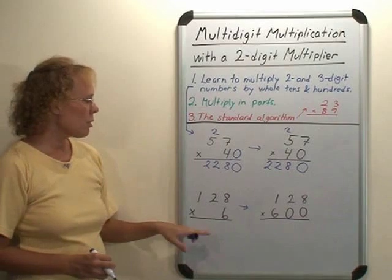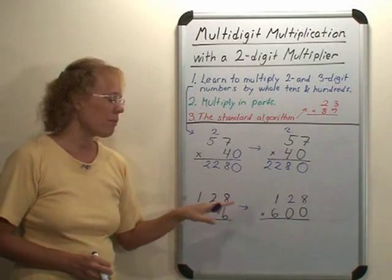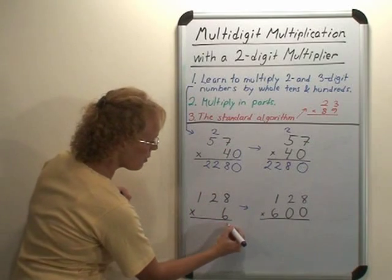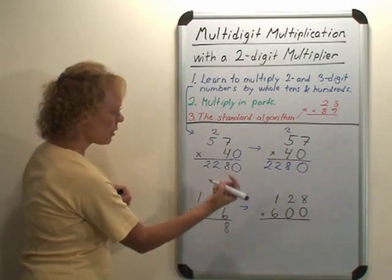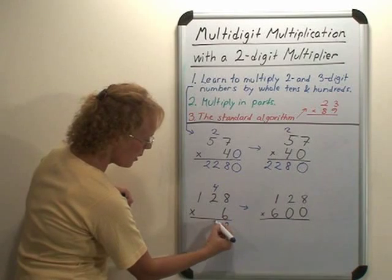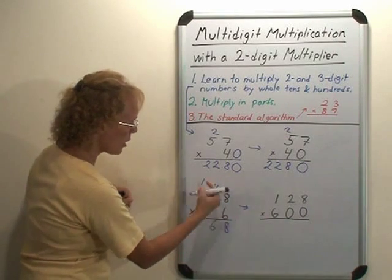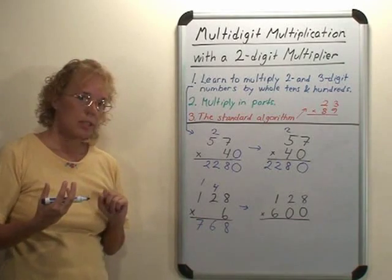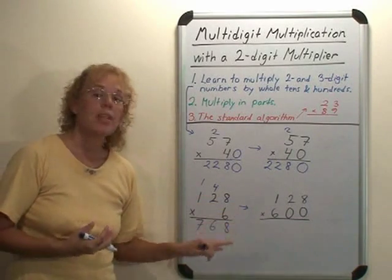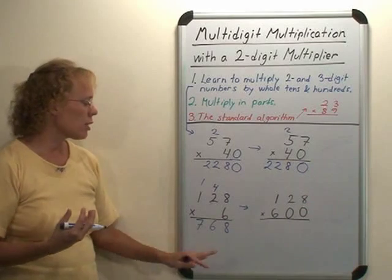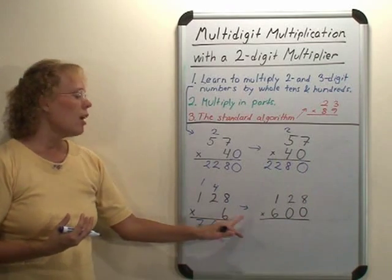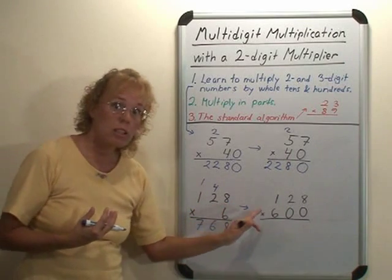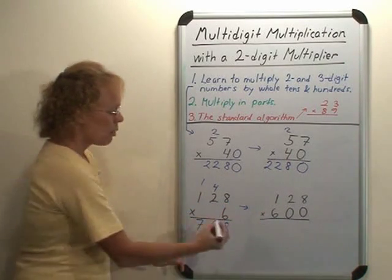Similarly, if we have a three-digit number, they already know how to multiply that. So 6 times 8 is 48, 2 times 6 is 12 plus the carry number 16, and then 1 times 6 plus 1. We can ask the students what would it be if we had 128 times 60, and they should be able to understand then we just tag a zero here. Or what would it be if it was 128 times 600?